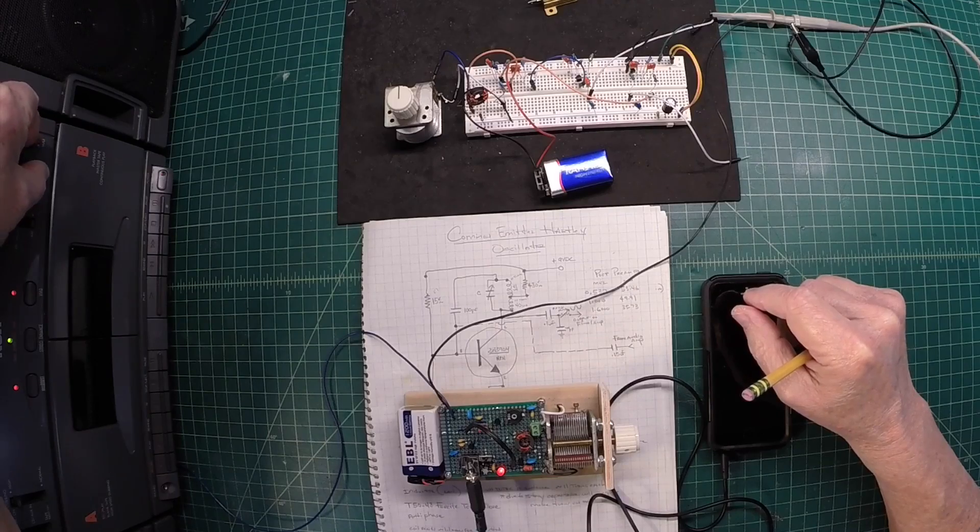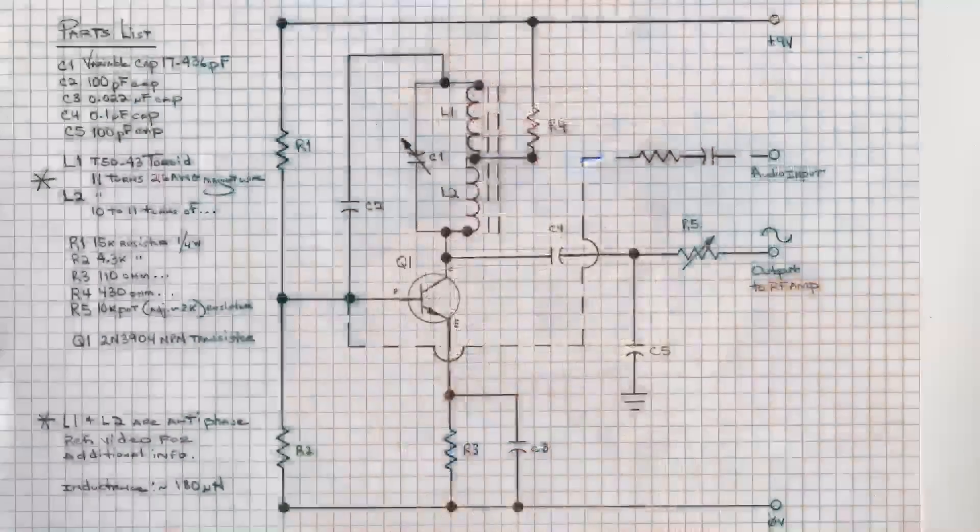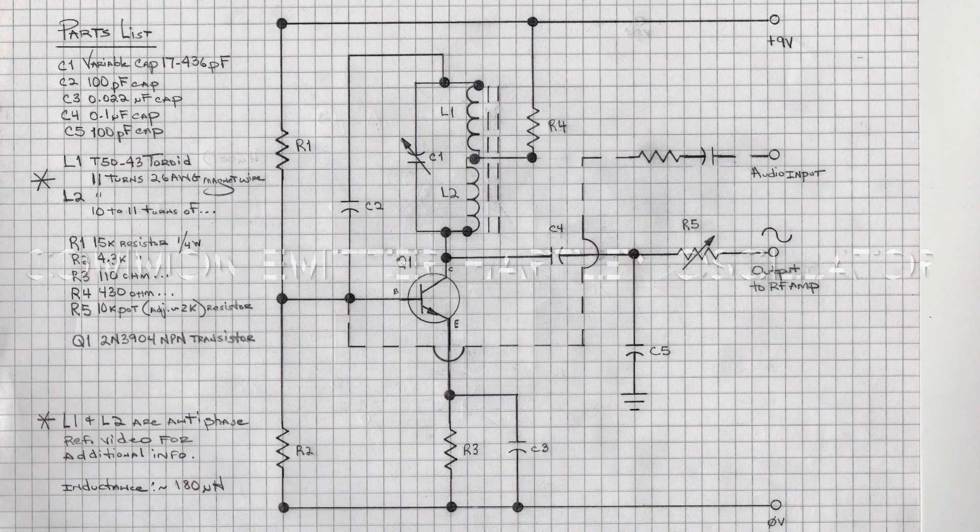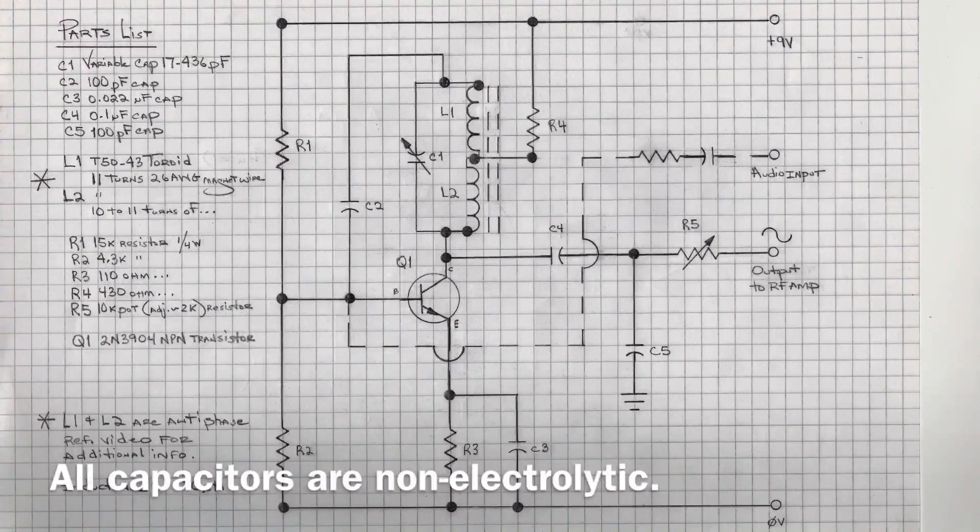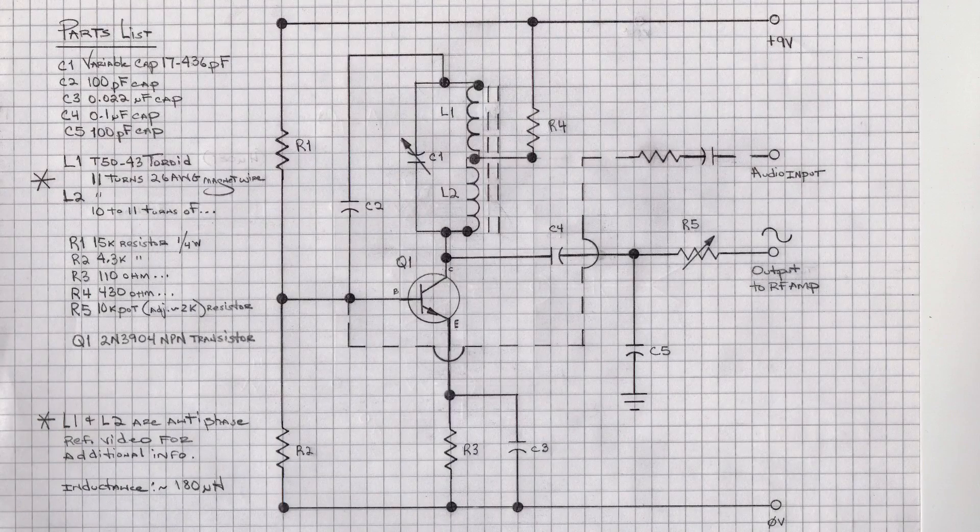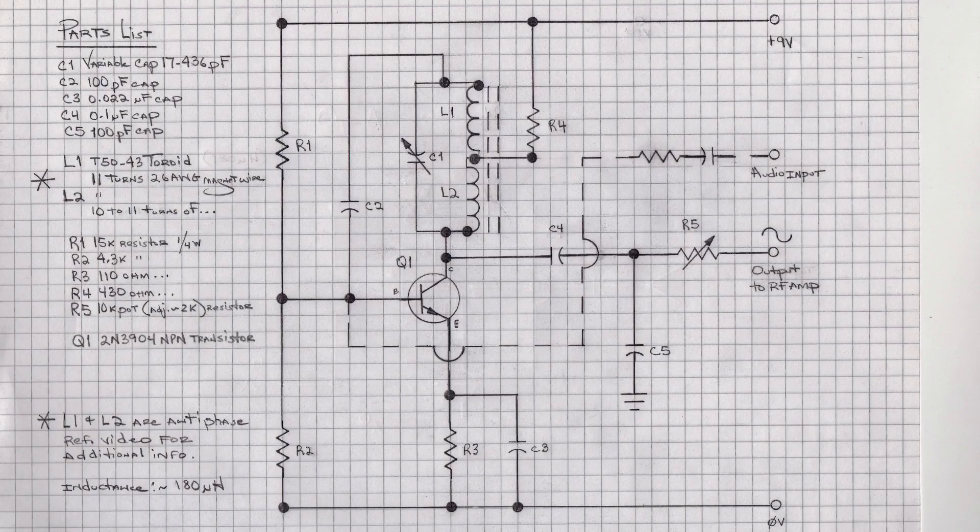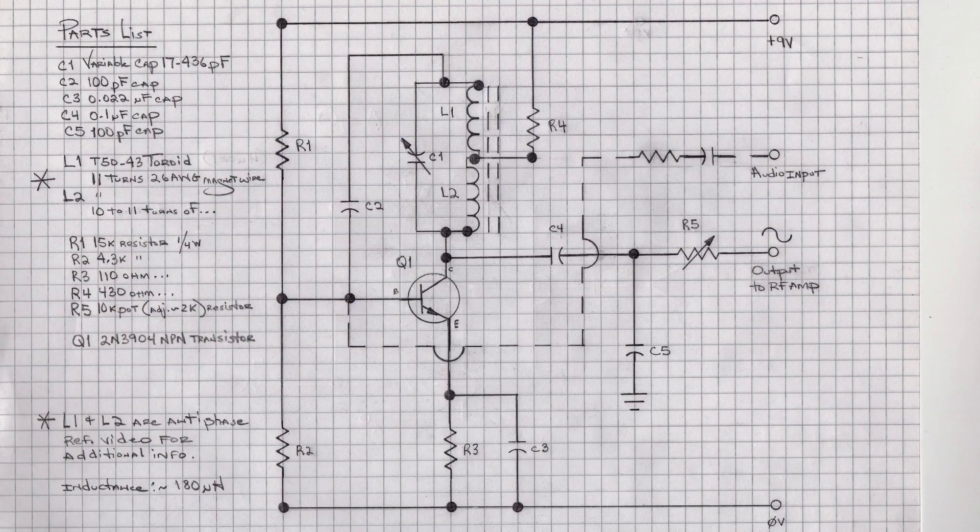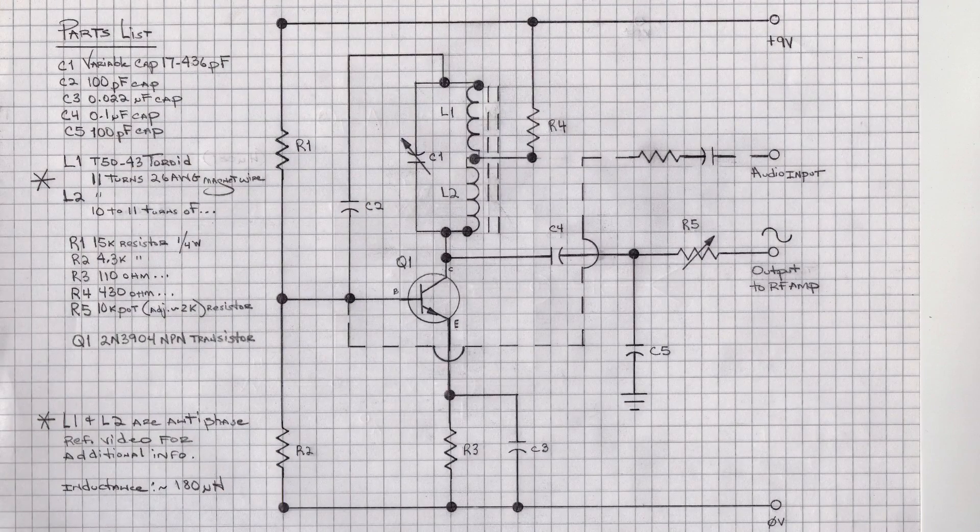Alright, let's take a look at the schematic here. To keep things simple, I elected to leverage a Hartley oscillator design and take advantage of the variable capacitor that I already had on hand as well as creating a simple inductor here for L1 and L2, which I'll expand on in just a moment.